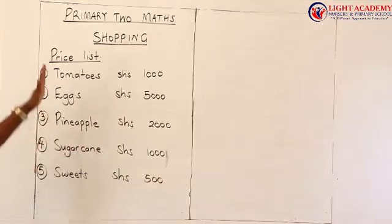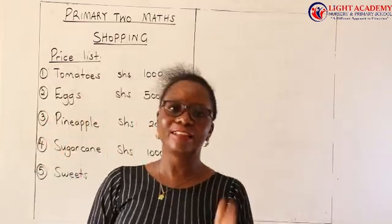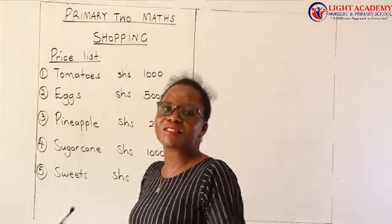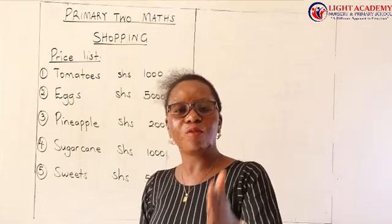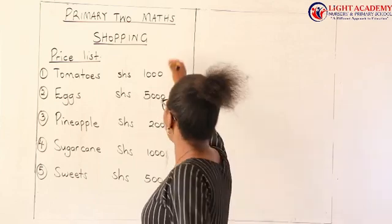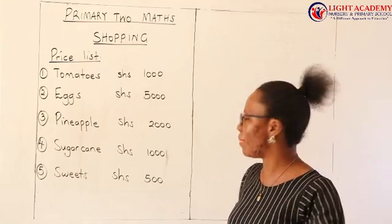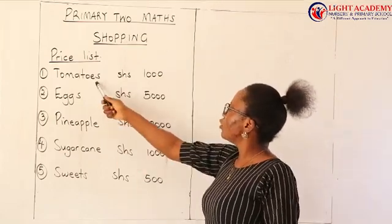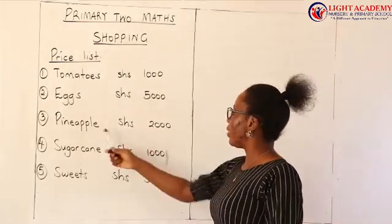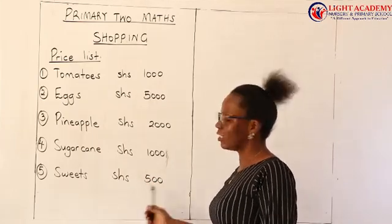So this is my shopping list. I make it from home before I enter the supermarket so that I know what I am going to buy — I don't just buy anything anyhow. To summarize: tomatoes 1,000 shillings, eggs 5,000 shillings, pineapple 2,000 shillings, sugar cane 1,000 shillings, sweets 500 shillings.